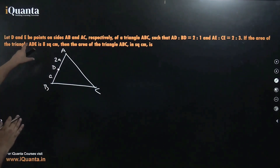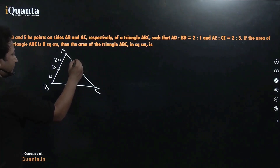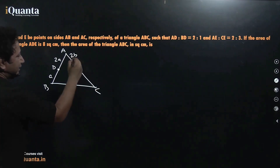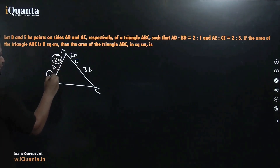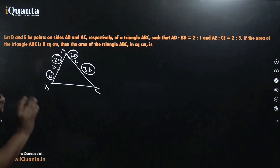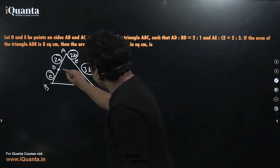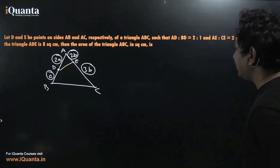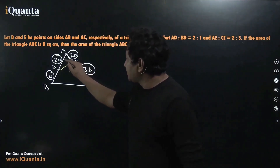We have to pick point E on AC such that AE:EC = 2:3. Let AE = 2b and EC = 3b. So now we have these values, which will be very important for solving this question. It is also given that the area of triangle ADE is 8 square centimeters. I'll join DE so triangle ADE has area 8 square centimeters, and we need to find the area of triangle ABC.